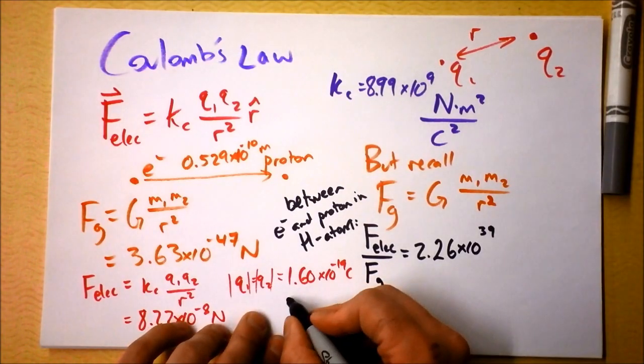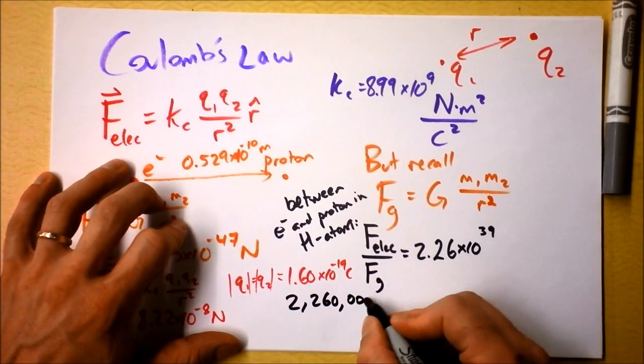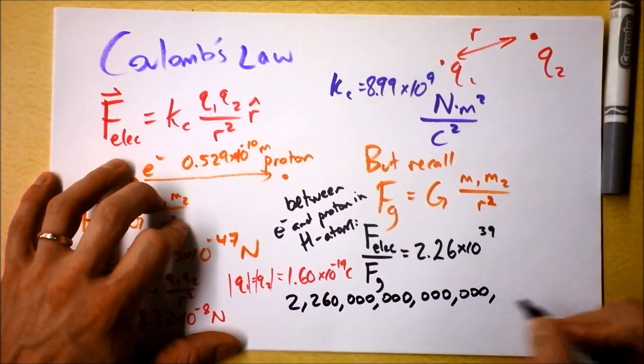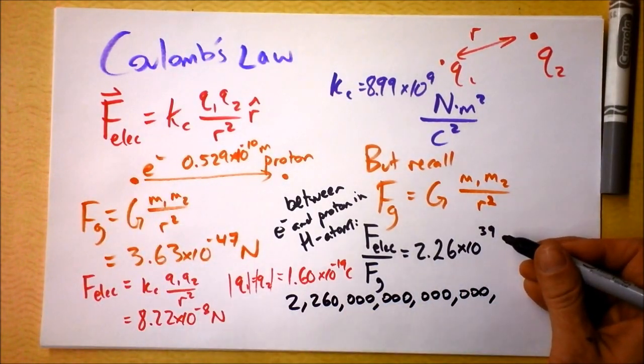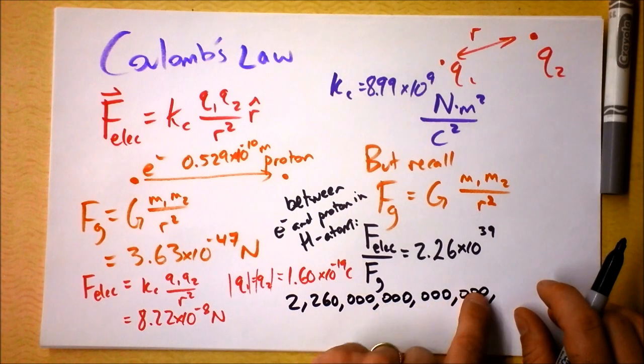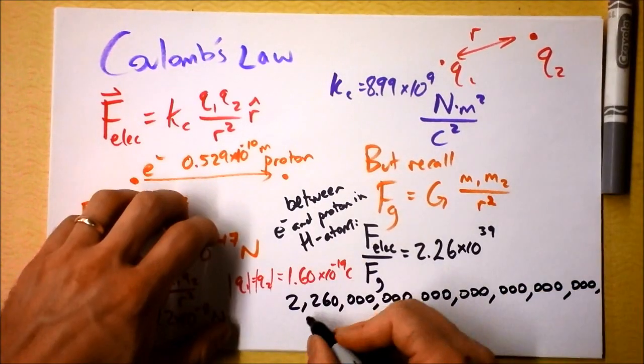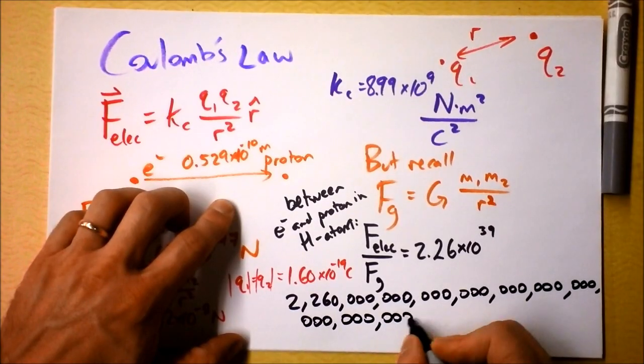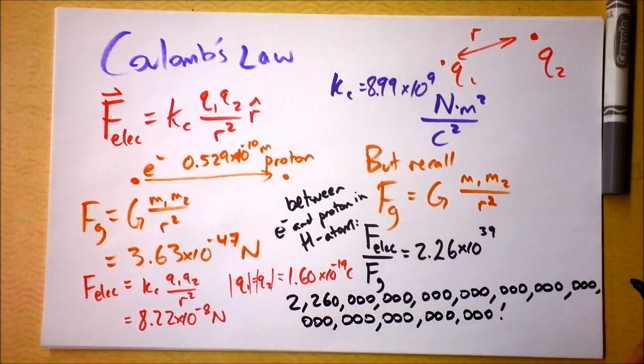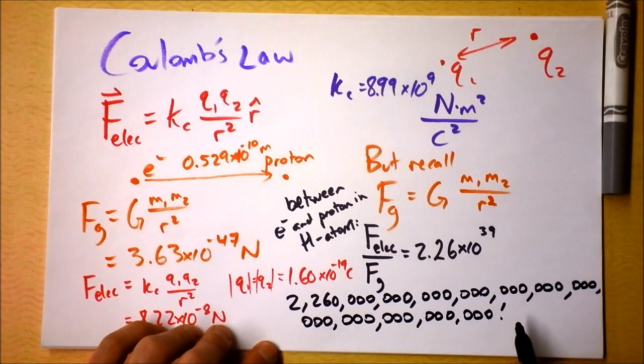So what if I were to write it out for you? I would go 2,260, and then I'd start putting some zeros down, and I guess I need 3, 4, 5, 6, 7, 8, 9, 10, 11, 12, 13, 14, 15, 16, 17, 18, 19, 20, 21, 22, 23, 24, 25, 26, 27, 28, 29, 30, 31, 32, 33, 34, 35, 36, 37, 38, 39. Wow, that's a lot bigger. I'll put an exclamation point right there. If I were to pronounce this, I would probably say it's 2.26 thousand billion billion billion billion billion. Wow.